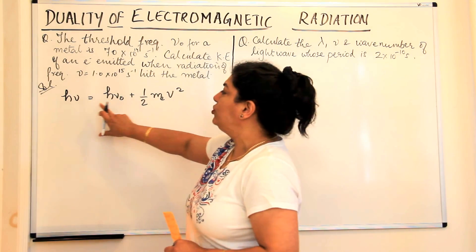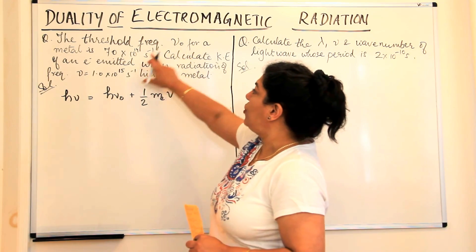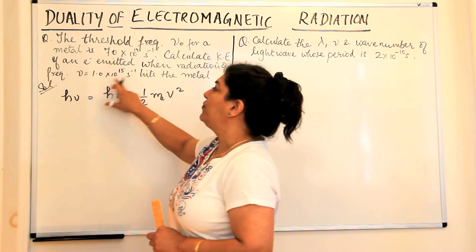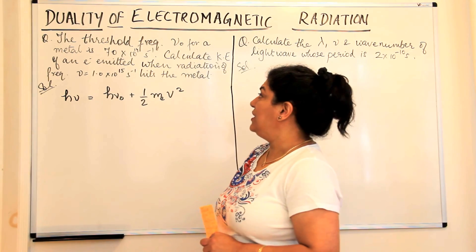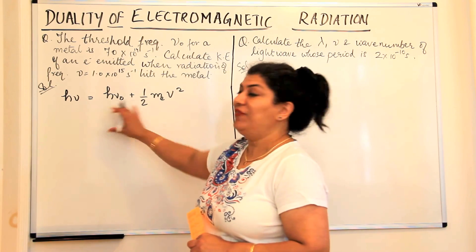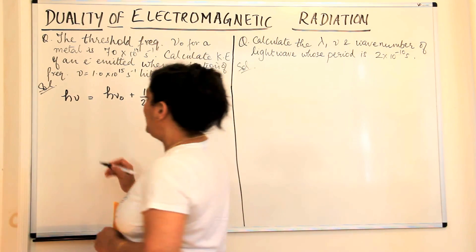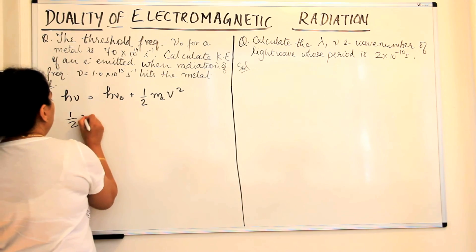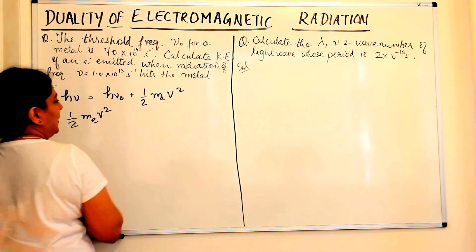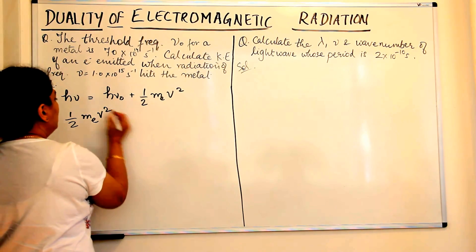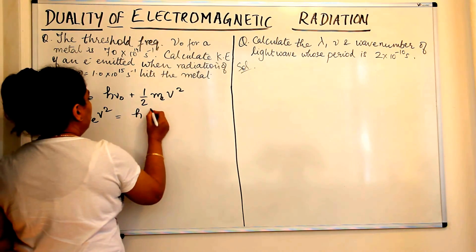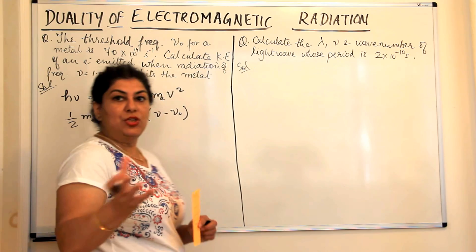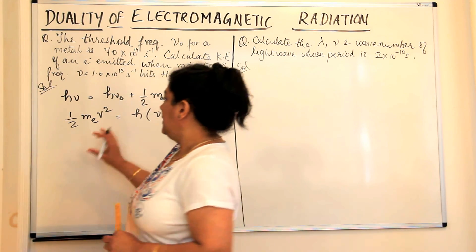We've been given both ν and ν₀. ν₀ is 7 × 10¹⁴ per second and ν is 1 × 10¹⁵ per second. If we rearrange this equation, we get ½mₑv² = h(ν − ν₀). So we just rearranged the equation.